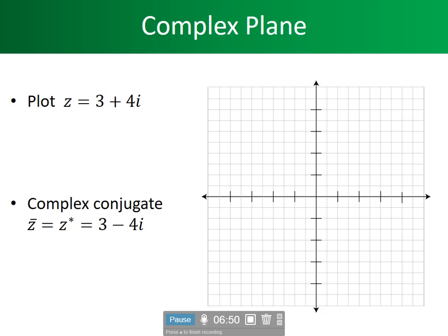What we would like to do now is make some applications. If we want to plot a point, our x-axis is the real part — say 3, so we go over 1, 2, 3. Our y-axis is the imaginary part — so we go up 4: 1, 2, 3, 4. The point we're looking at is plotted there.